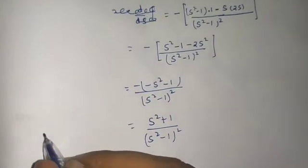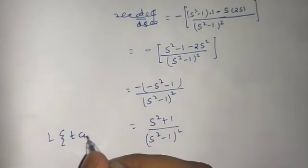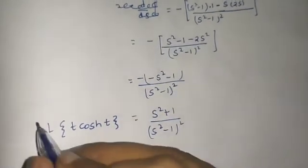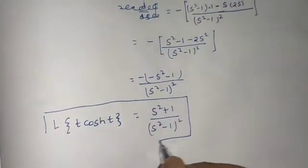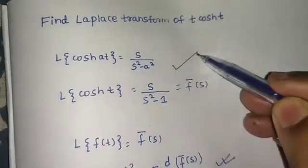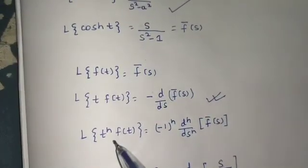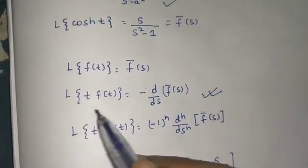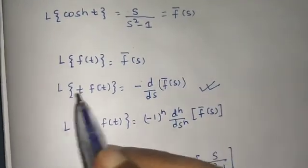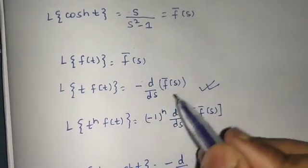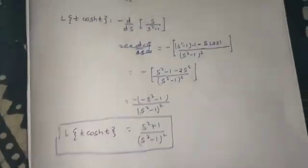So the Laplace transform of t·cosh(t) equals (s²+1)/(s²-1)². The first formula was Laplace of cosh(t) = s/(s²-1), and then using the rule for multiplication by t — with a single multiplication, we get (-1)¹ times the first derivative of the Laplace of f(t). Again, a simple question based on Laplace transforms.